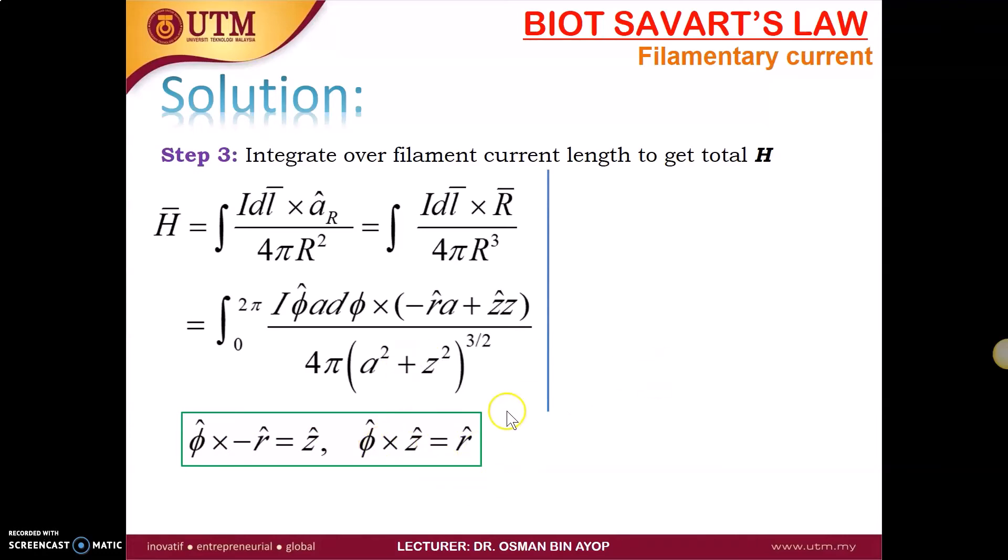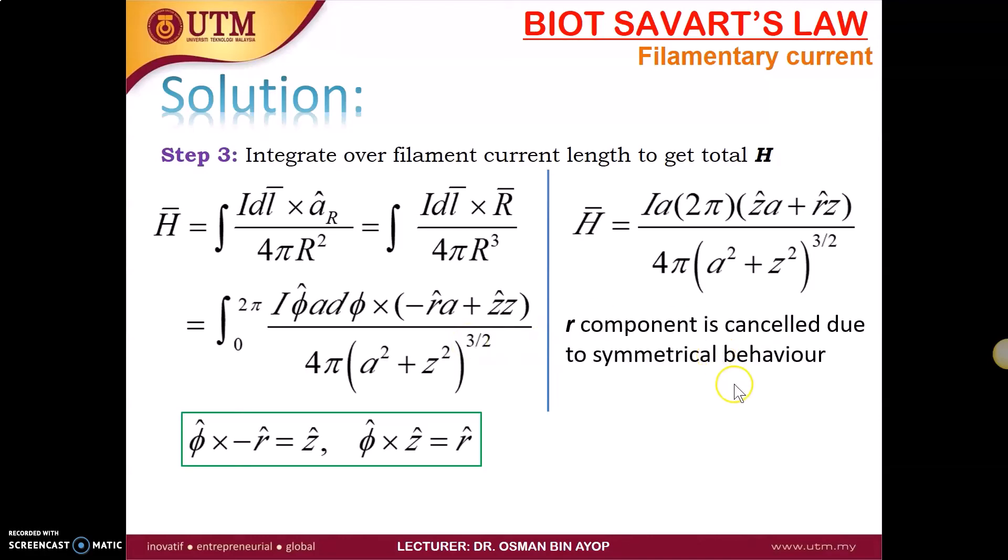So we solve this, we got the H is equal to I A 2 pi Z A plus R Z divided by 4 pi A square plus Z square to the 3 over 2. Because our integration only in the direction of D phi, we don't have phi here. So all the terms are just like a constant, so it's more easier.